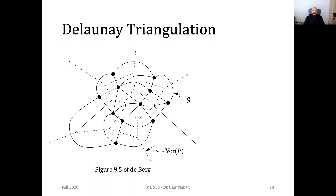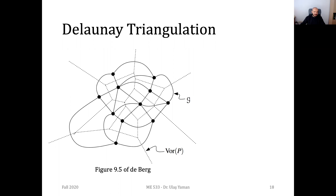Now let's start going into the Delaunay triangulation. Do you see something similar to what we discussed last week? A student asks: isn't it a Voronoi diagram? Yes, right. We have dashed lines as the Voronoi diagram — these are the edges of the Voronoi diagram, along with the vertices and the sites of the Voronoi diagram.